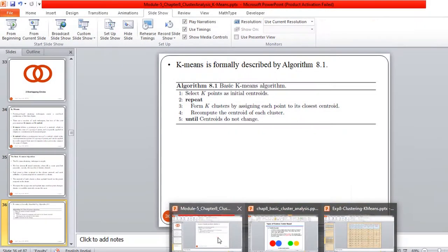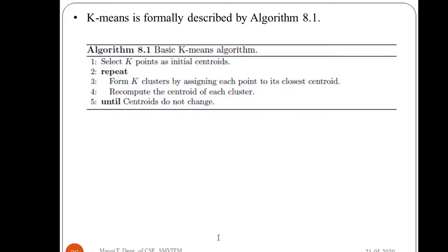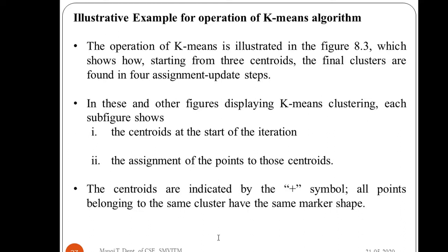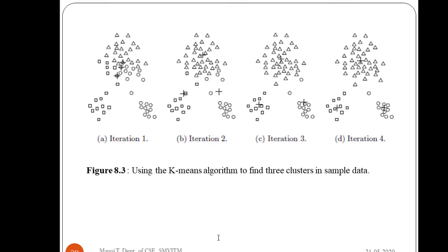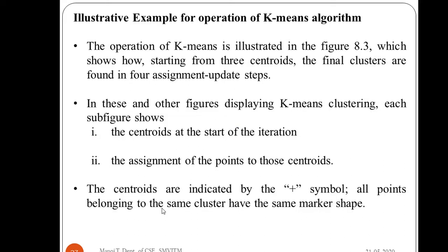Next we will see one illustrative example theoretically for k-means. The operation of k-means is illustrated in this example starting from three centroids, and the final clusters are found in four assignment-update steps. The centroids at the start of each iteration are indicated by a plus symbol, and all points belonging to the same cluster have the same marker shape.